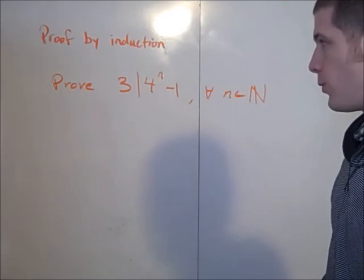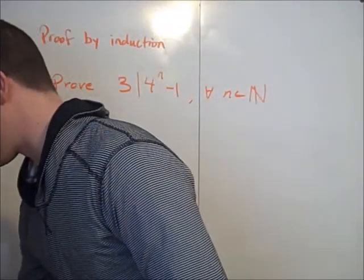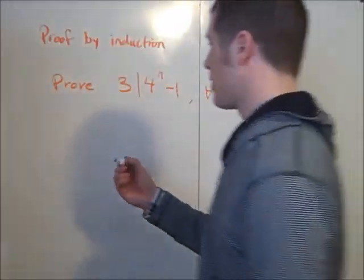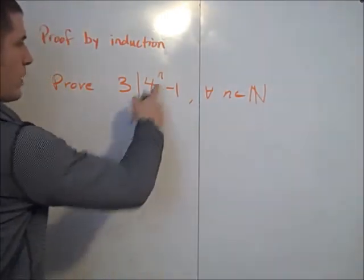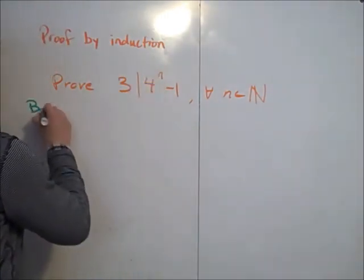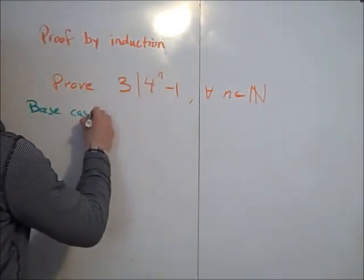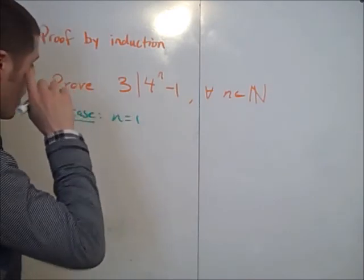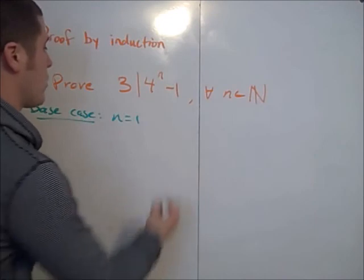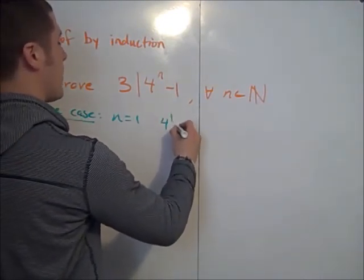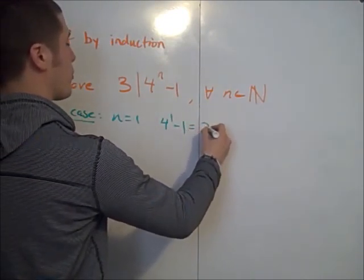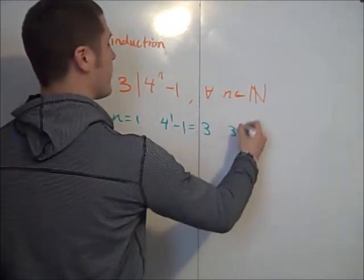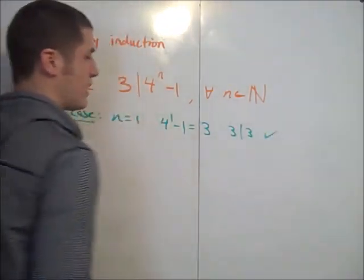So the first thing you have to do is show that it works for your base case. So our base case is when n equals 1. Well then what do we have? We have 4 to the 1 minus 1 is 3. 3 divides 3, so the base case works.